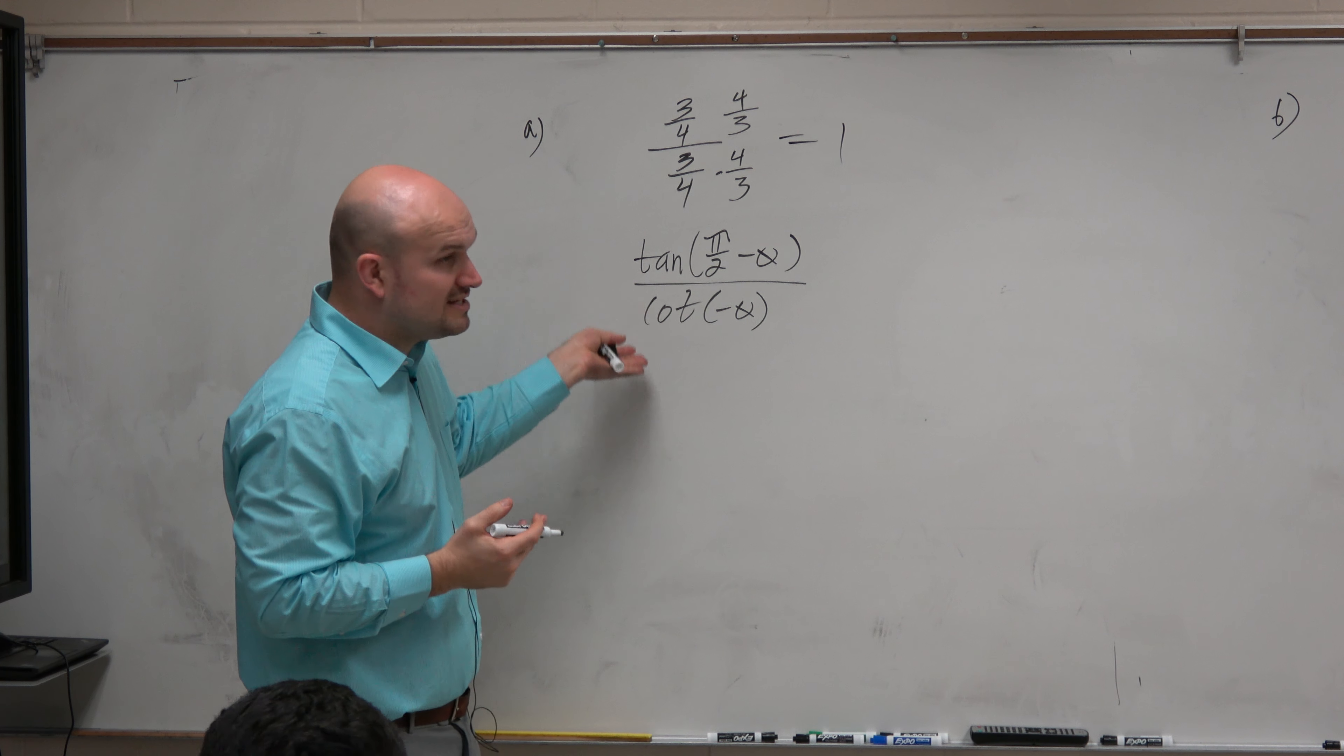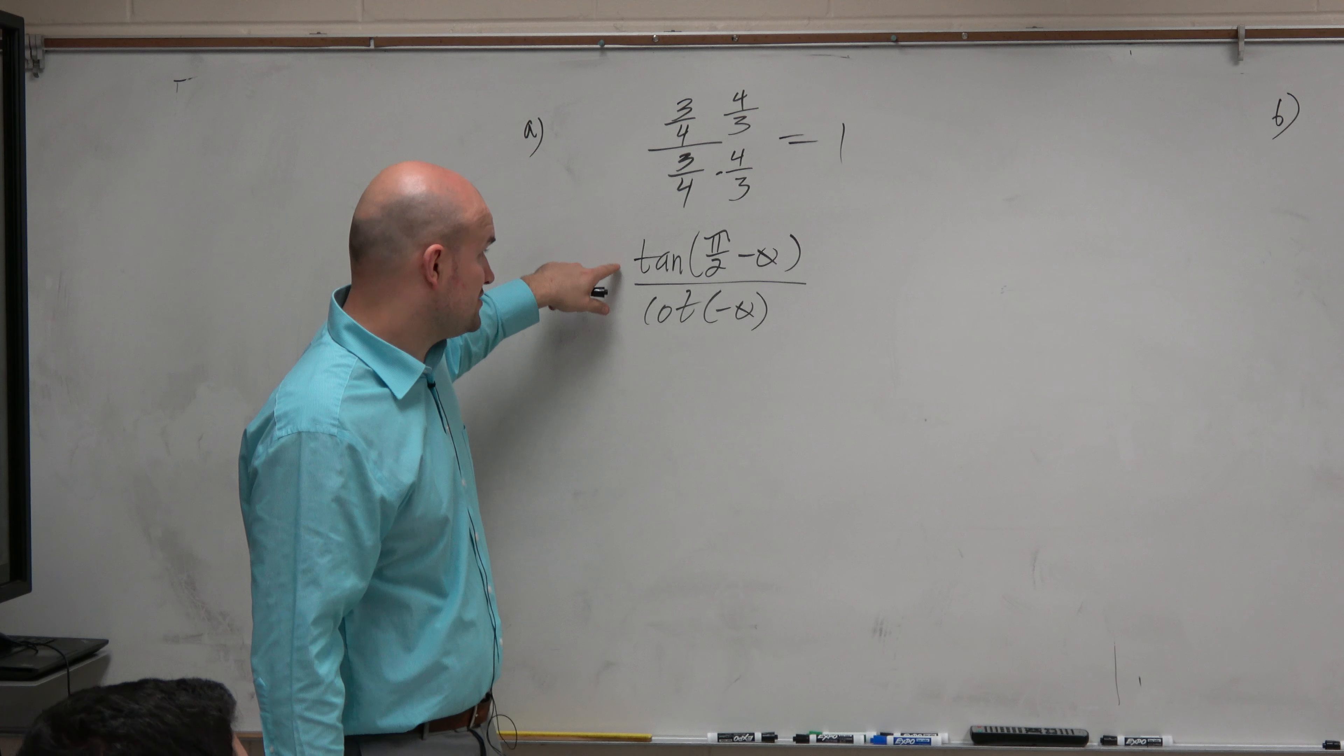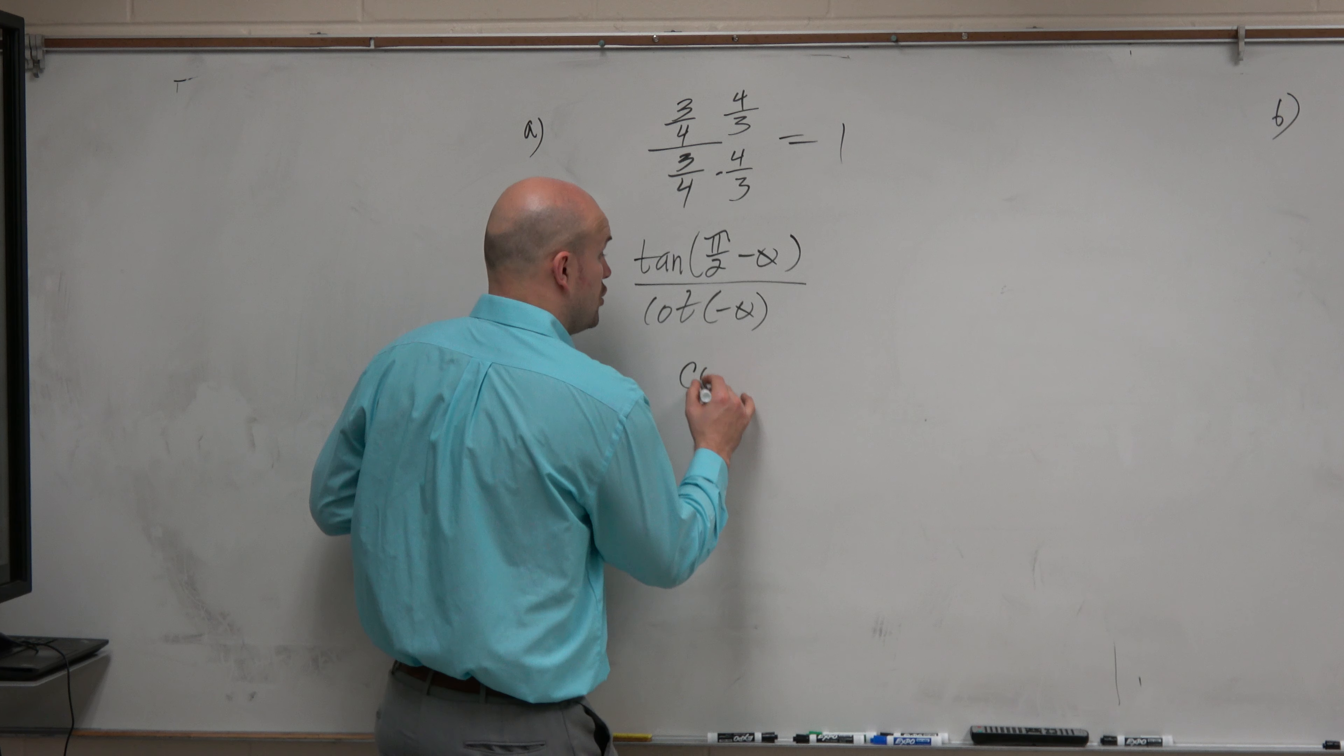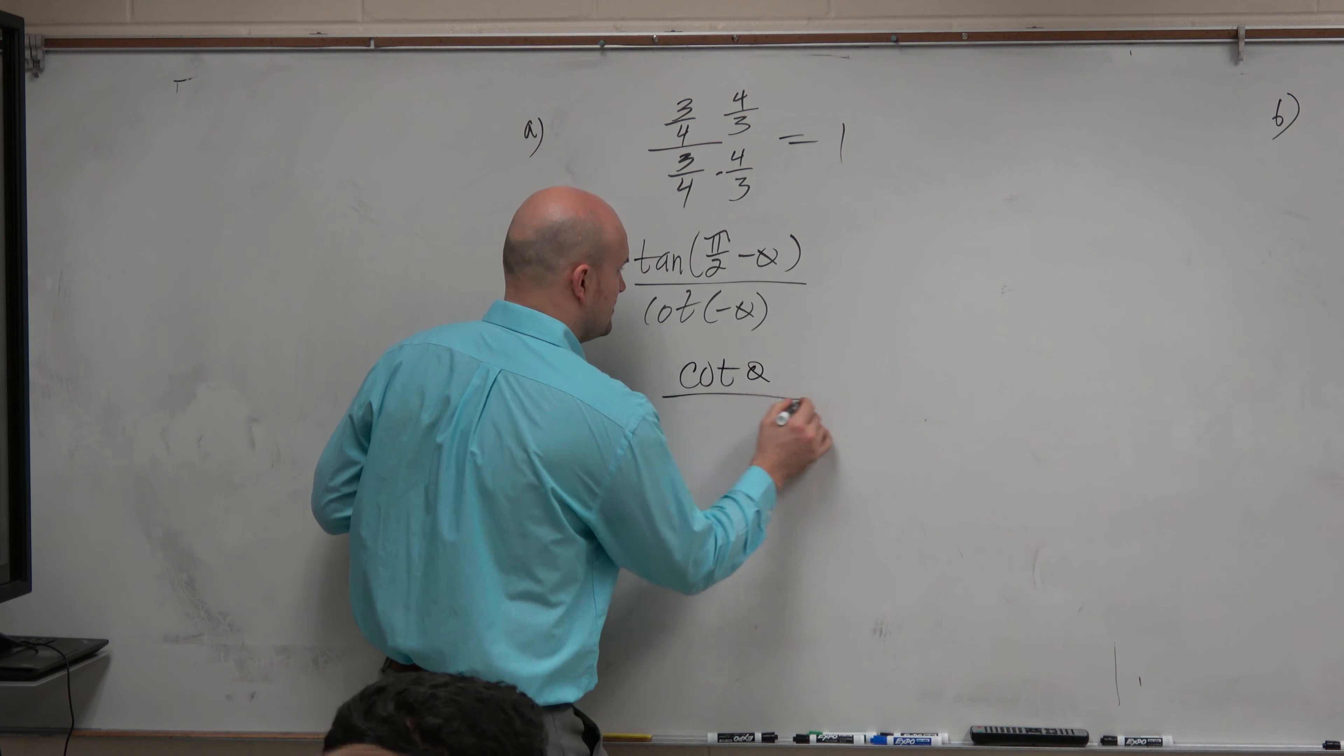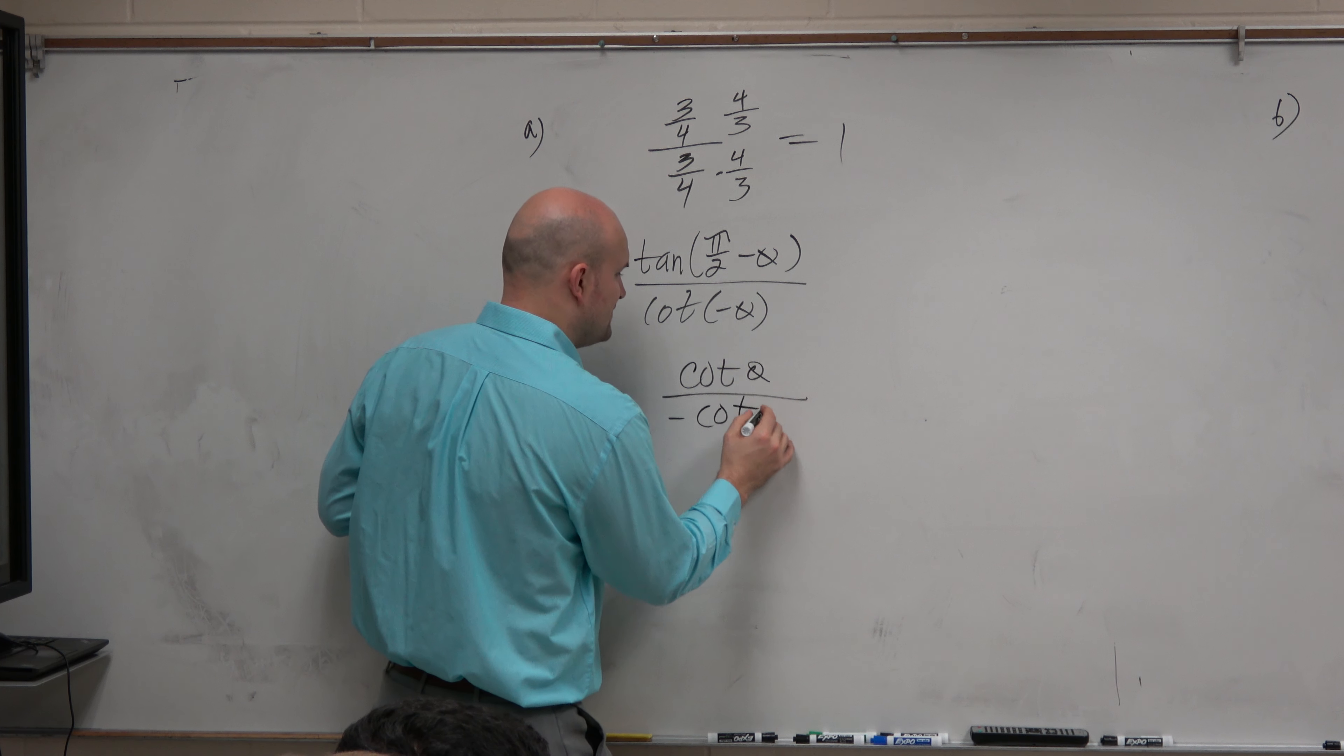So now this doesn't look like it's something divided by itself. But if I understand my co-function idea, I say, oh, tangent of pi halves minus theta, that's the same thing as cotangent of theta. And cotangent of a negative angle is the same thing as cotangent of negative theta.